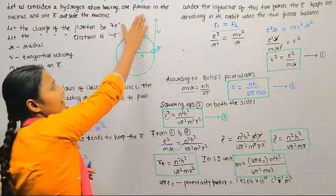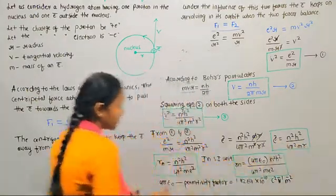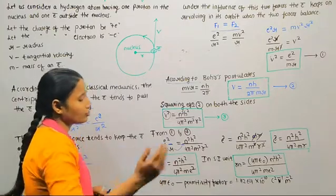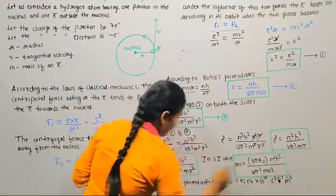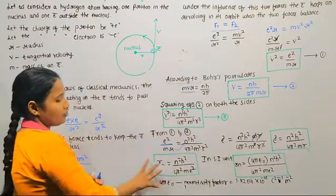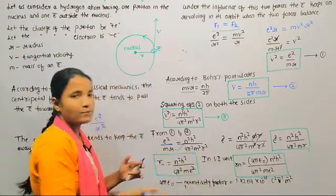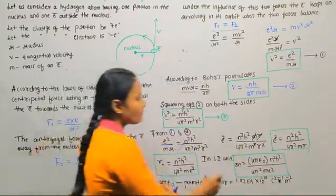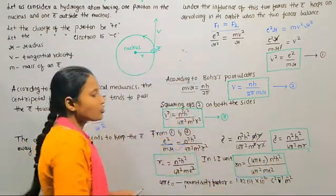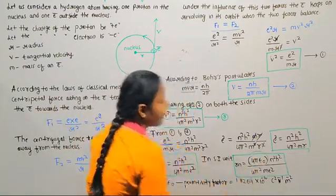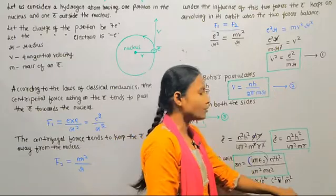Now we will derive the radius. Solving for r, we get r_n — the radius of the nth orbit, where n may be 1, 2, 3, and so on — r_n is equal to n square h square divided by 4 pi square m into e square. This is the derivation of the radius of the nth orbit. In SI units, you multiply by 4 pi epsilon naught, so r_n is equal to 4 pi epsilon naught n square h square divided by 4 pi square m into e square. Here, 4 pi epsilon naught is known as the permittivity factor, whose value is 1.11264 into 10 to the power minus 10 C square per newton per meter square.